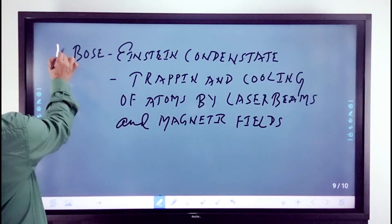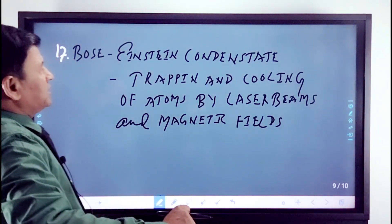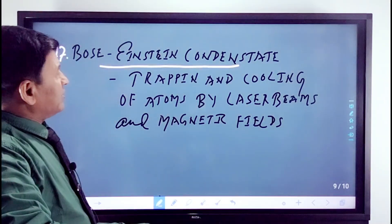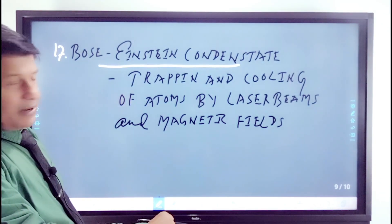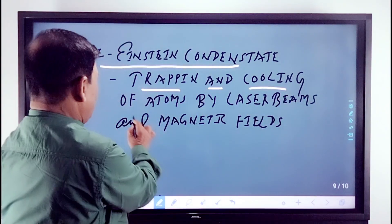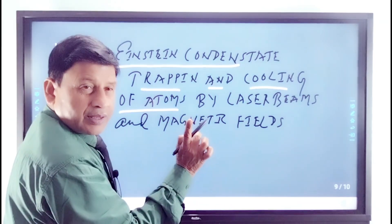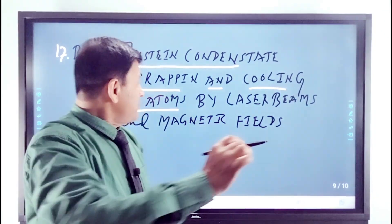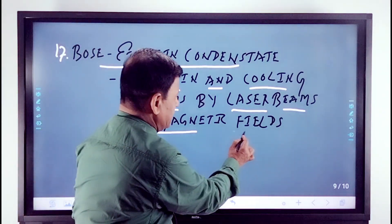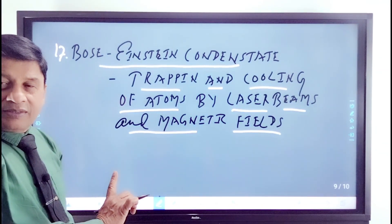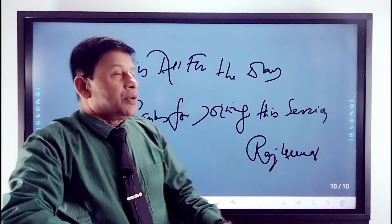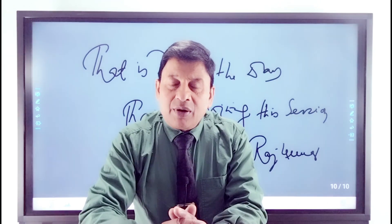Now it's the 17th: Bose-Einstein condensate. This fifth state of matter, Bose-Einstein condensate. Trapping and cooling of atoms by laser beams and magnetic fields. Remember, very important point here. That's all for the day, thanks for enjoying the session.